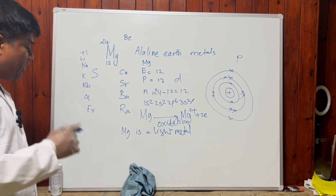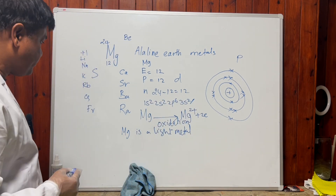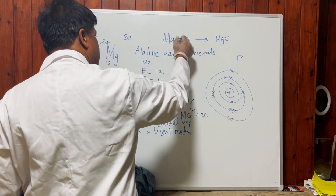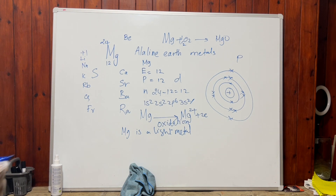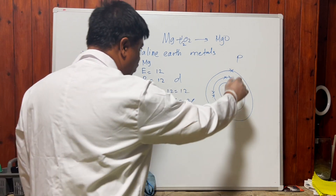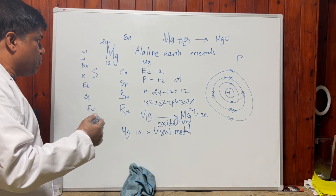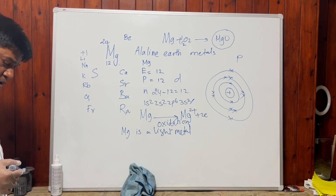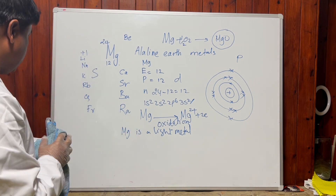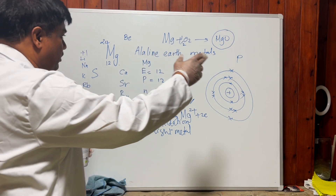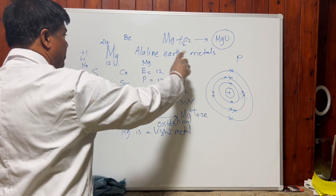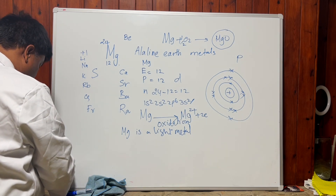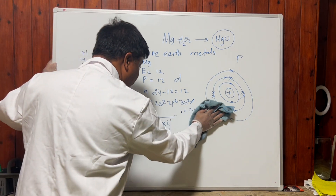When a metal reacts with oxygen, it forms a metal oxide. When you expose magnesium to air, it reacts with oxygen and forms magnesium oxide: 2Mg + O₂ → 2MgO. When magnesium reacts with a non-metal, any p-block element, it forms an ionic bond. So the type of bonding present in metal and non-metal compounds is ionic. Now, when a metal reacts with acid, we need to consider what happens.